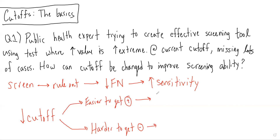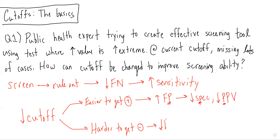Therefore, we are going to increase false positives, which will lead to a lower specificity and a lower PPV — remembering the P's run with one another. And we will get decreased false negatives, which will lead to a resulting increase in sensitivity, which is what we are looking for, and an increase in NPV.